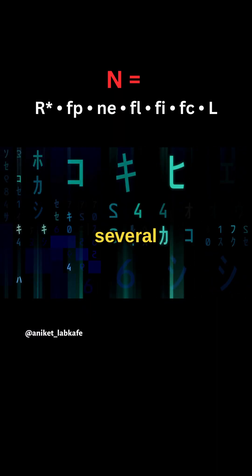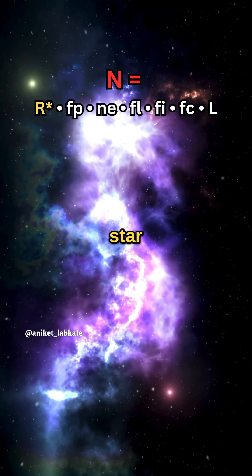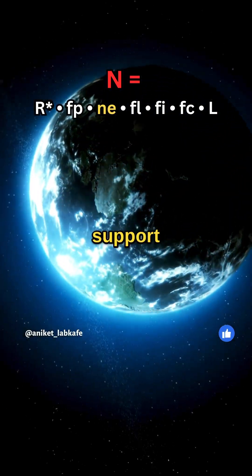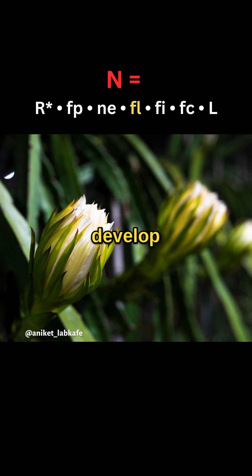N is the product of several factors including the rate of star formation, the fraction of stars with planetary systems, the number of planets that could support life, and the fraction that could develop life.